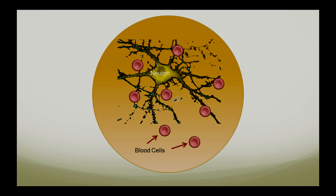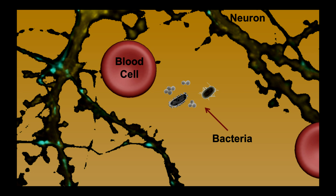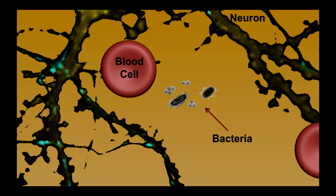If you look right around the central blood cell, there are some smaller features — and those are bacteria. You can see they're a lot smaller than the blood cell. If we zoom in even more, we see some smaller cells, and we can identify what we've been looking at: those are E. coli and staphylococcus.